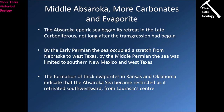By the middle Absaroka we have more carbonates and evaporites. The Absaroka Epeiric Sea began its retreat in the late Carboniferous, not long after the transgression had begun — so it wasn't around for very long. By the early Permian the sea occupied a stretch from Nebraska to West Texas, and by the middle Permian it was limited to southern New Mexico and West Texas. The formation of thick evaporites in Kansas and Oklahoma indicates the sea became restricted as it retreated southwestward, leaving isolated bodies of water that evaporated and left behind evaporite deposits.